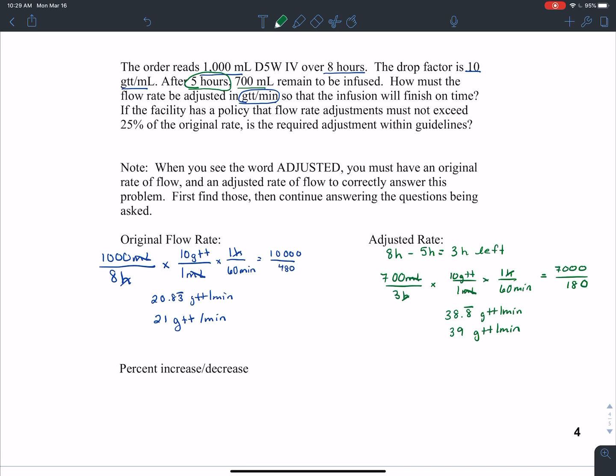So I can now calculate what needs to change. So if I'm thinking about the adjustment itself, that's going to be the 39 drops per minute minus the 21 drops per minute, which tells me that we're changing this flow rate by 18 drops per minute. And it's going to be an increase.